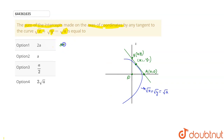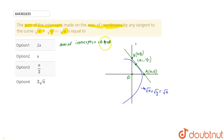We have to find the sum of intercepts, which is given by OA plus OB, because the tangent cuts the x-axis at point A and the y-axis at B. So we have to find the sum OA + OB.